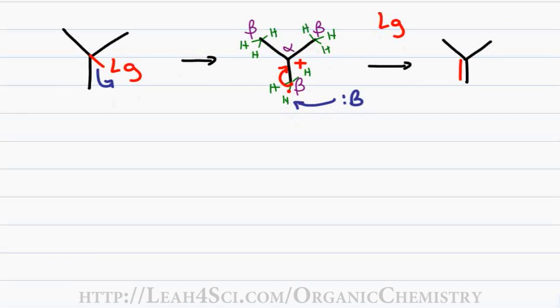An important thing to recognize is that even though the leaving group is departing by itself, this is still a very slow step because you're taking a neutral molecule and breaking something off it, resulting in a positive product. This slow step is the rate determining step of the reaction.